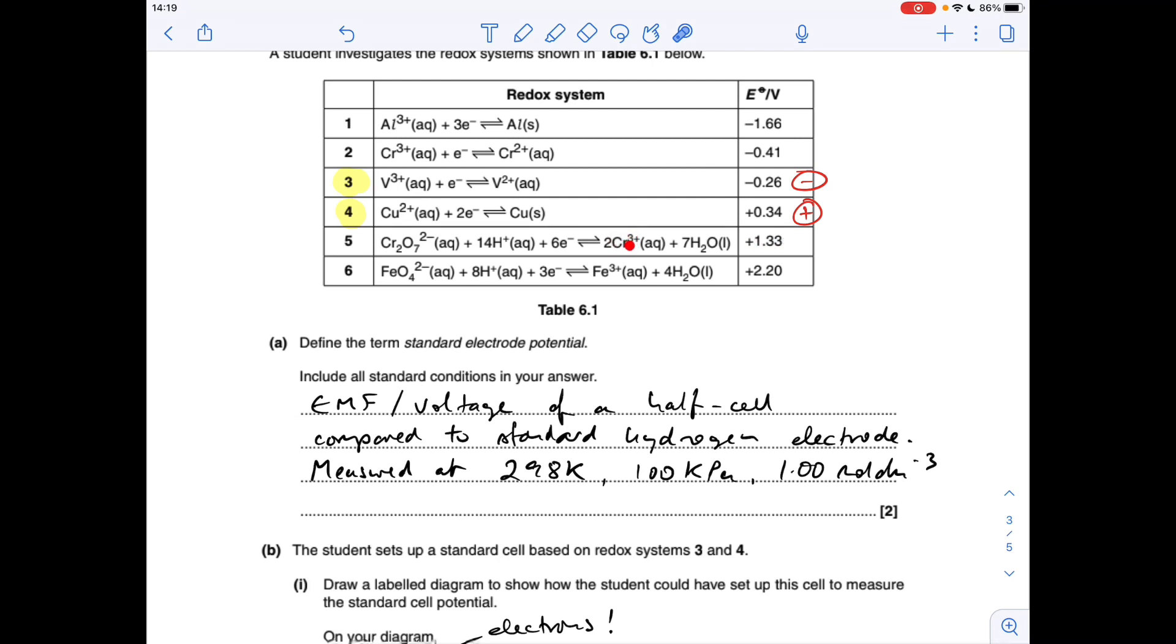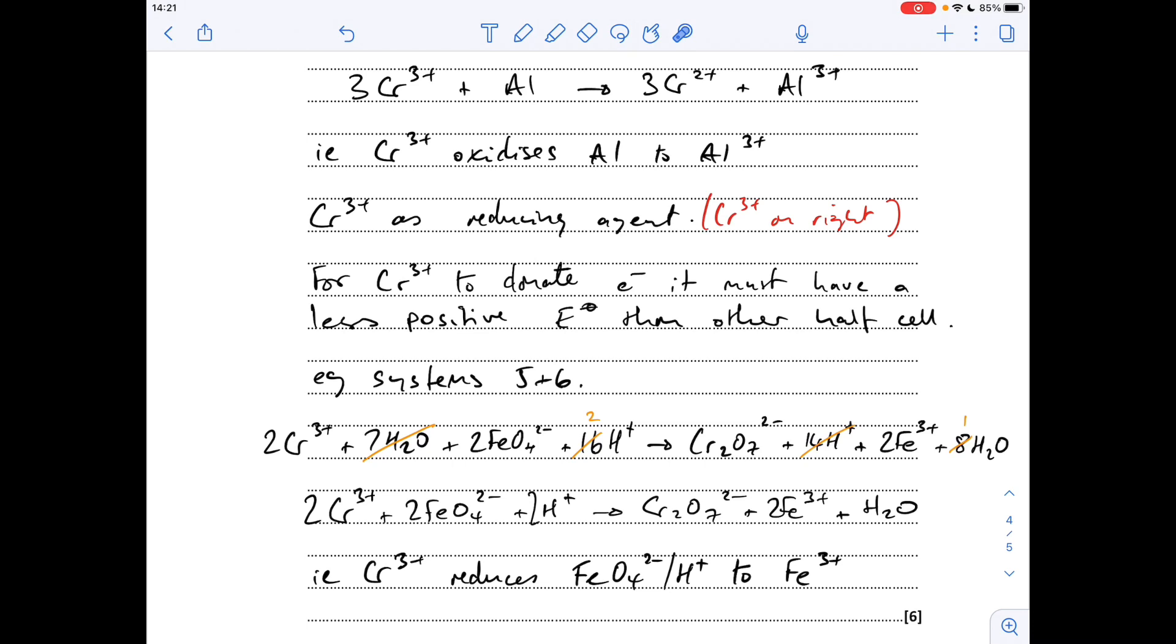For the Cr3+ to donate electrons, it must have a less positive electrode potential than the other half cell. In other words, systems five and six. There's the overall equation before I've cancelled it down. The iron half equation needed to be doubled because it only had three electrons in it, whereas the chromium one had six. So we doubled that equation out, added it together, and then cancelled the waters and the H+ ions. In other words, Cr3+ reduces this acidified FeO4 2- to Fe3+.